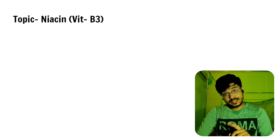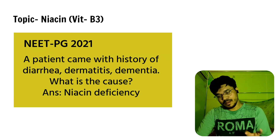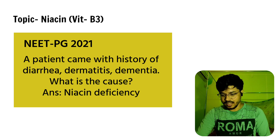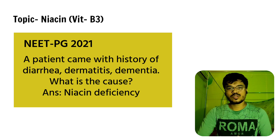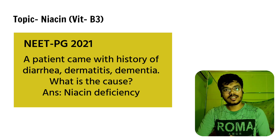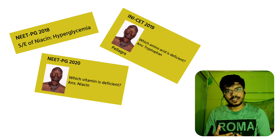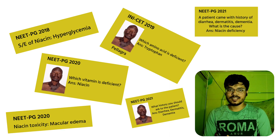One more question in the same paper — just the vice versa. Now they give the history of diarrhea, dermatitis, and dementia, and ask what is the cause. The cause is Niacin deficiency. Every year the same topic is repeatedly asked. So the topic remains the same, but the pattern of the question changes.